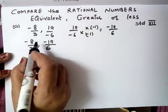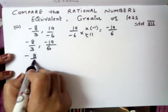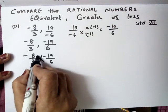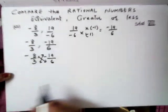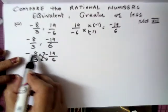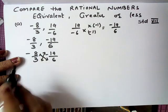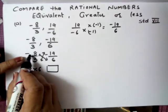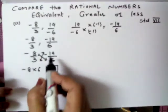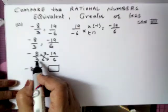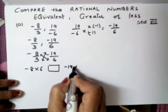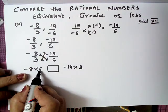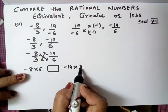Now you have to take cross multiply — minus 8 upon 3 aur minus 19 upon 6 ka aap cross multiply karoge. Ab cross multiply mein kya hoga? First numerator with second denominator — sequence ko change bilkul nahi karna hai. First numerator ko second denominator se multiply, second numerator ko first denominator se multiply. Isko aap change bilkul nahi karenge: first numerator, second denominator; second numerator, first denominator.